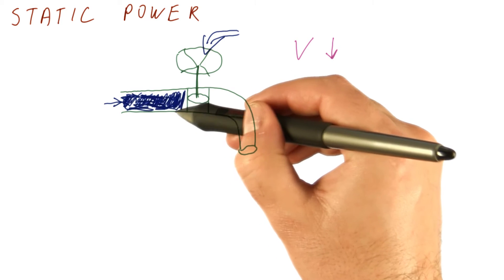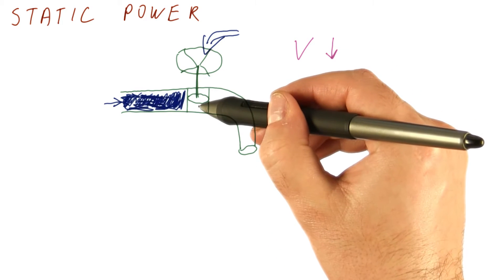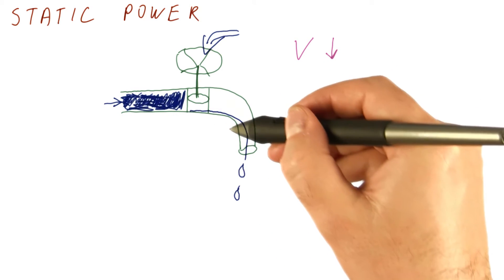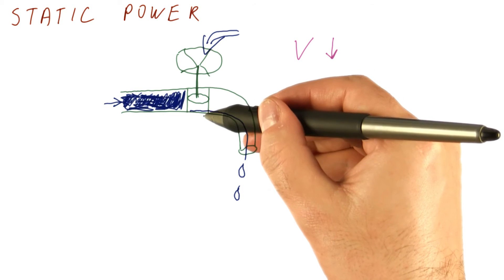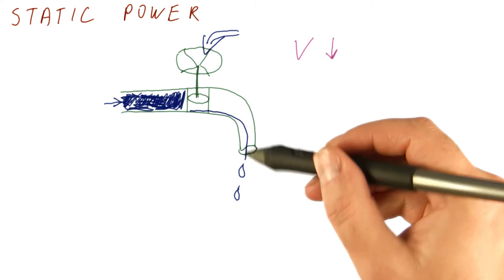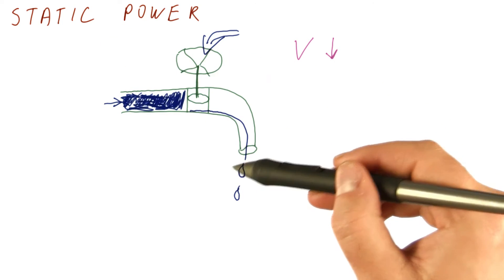And as a result, because there is water pressure here and the valve is not closed very well, there will be some leakage of water because the faucet is not totally closed. So one component of static power is this leakage.